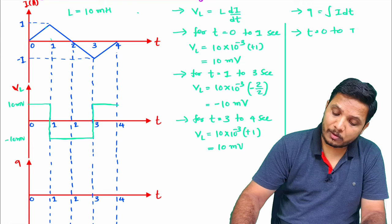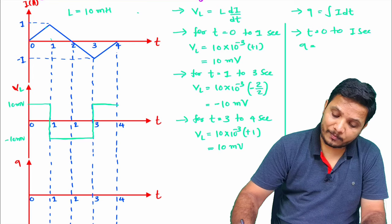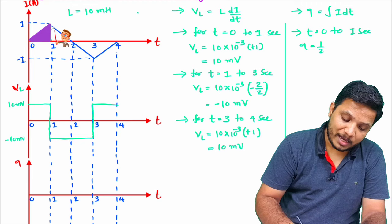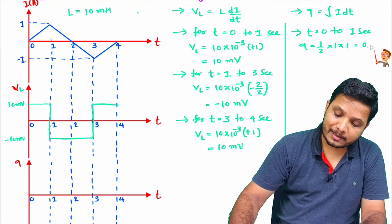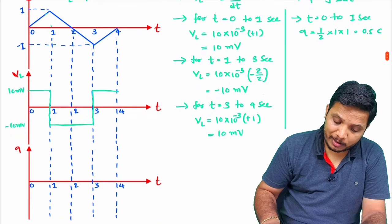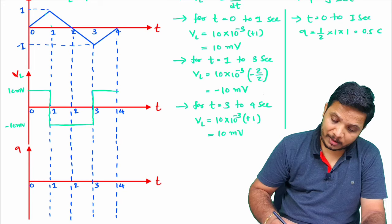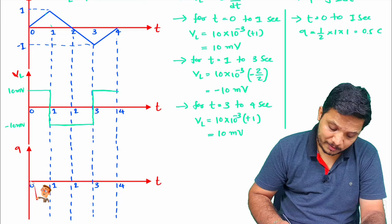During t = 0 to 1 second, the charge is the area under the current curve, which is half of height times base: ½ × 1 × 1 = 0.5 Coulombs. As the current is increasing, the charge increases to 0.5 Coulombs, rising in this interval.